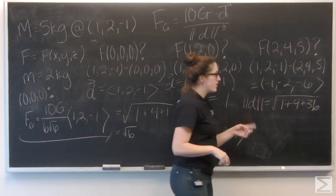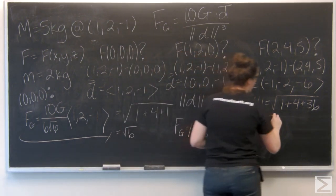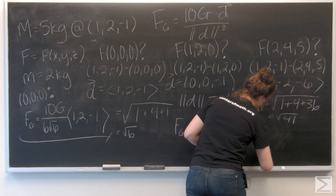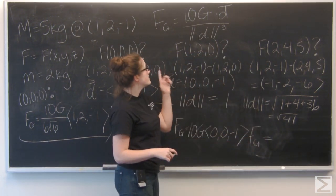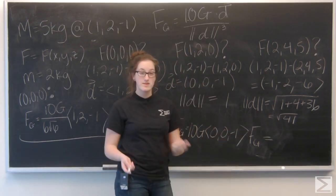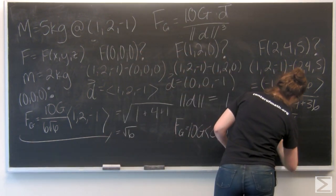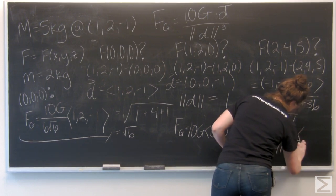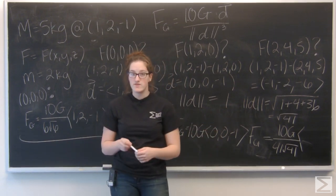So I have the square root of 1 plus 4 plus 36, the square root of 41. Now let's go ahead and find that gravitational force. So I have 10G over, this time I'm going to have 41 square root of 41, right? Because that's the magnitude cubed. And then let's multiply that by my vector (-1, -2, -6).